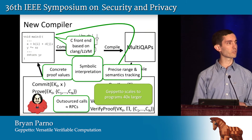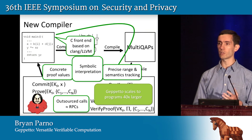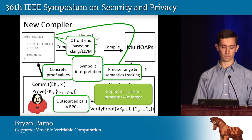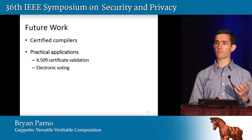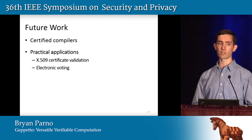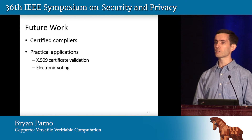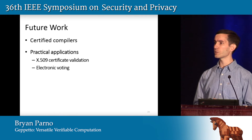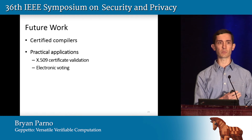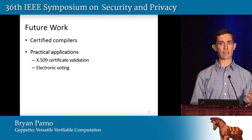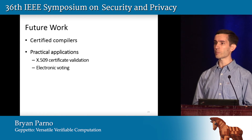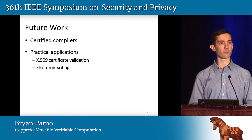Altogether, thanks to these improvements, Geppetto is able to scale up to programs 40 times larger than previous works such as Pinocchio was able to handle. As we add all this complexity to the compiler, it becomes more and more important to look at certification — being able to prove that the cryptographic material we're generating actually respects the semantics of the original program and that we haven't made a mistake during compilation. We've also started looking at various applications such as X.509 certificate validation as well as electronic voting.